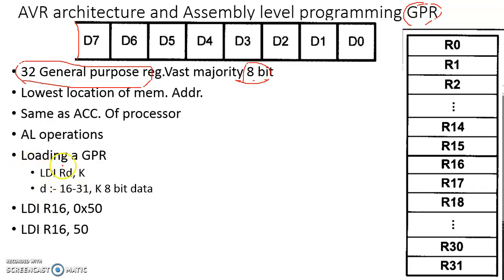Now we will see how data can be loaded to a general purpose register. The data loaded to a GPR can be hexadecimal data or decimal data as well.